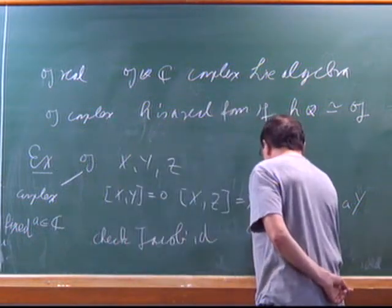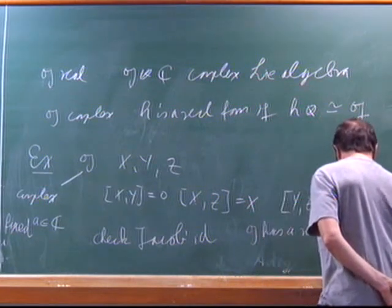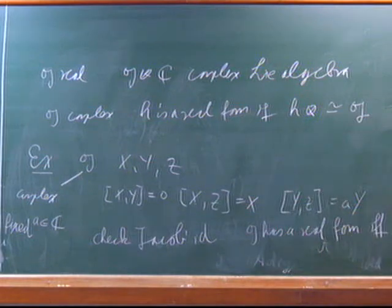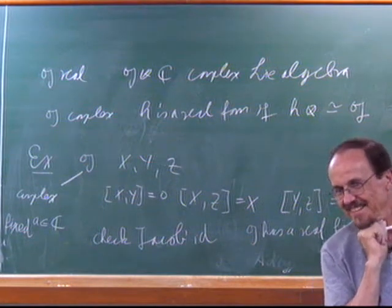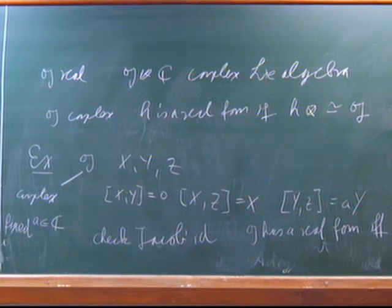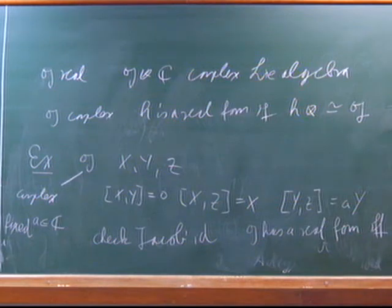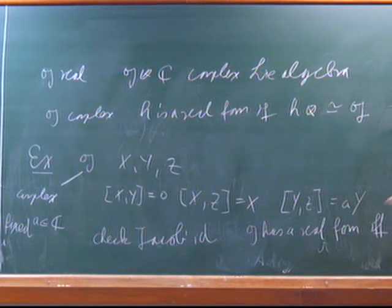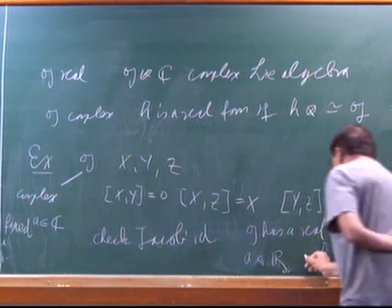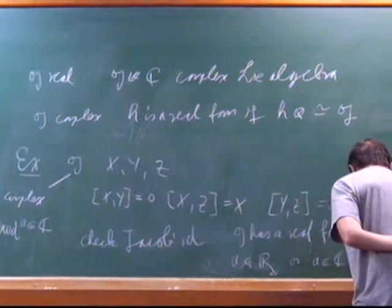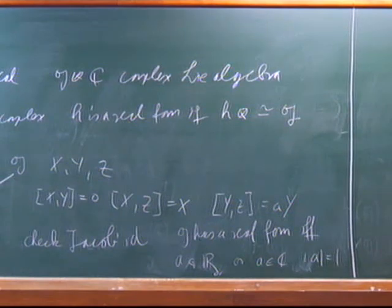The exercise is that G has a real form if and only if... there's one case where it's obvious: if A is real, then I just look at the real Lie algebra defined by this, which complexifies to give the complex one. Or, the interesting case: A is complex and the norm of A equals one. It's also the complexification of some real Lie algebra. Things in general don't have real forms, and a Lie algebra can have many real forms.